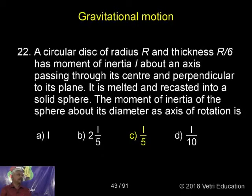A circular disk of radius r and thickness r by 6 has moment of inertia i about an axis passing through its center and perpendicular to its plane. It is melted and recasted into a solid sphere. The moment of inertia of the sphere about its diameter as axis of rotation.